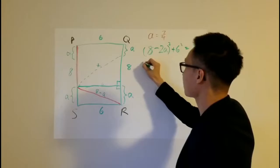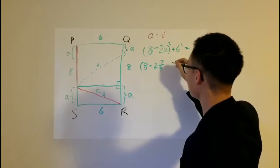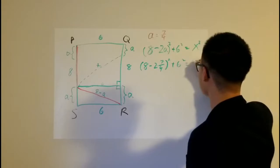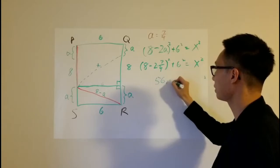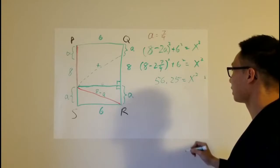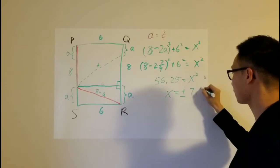So let's plug this in. This will give you 8 minus 2 times 7 over 4, to the power of 2 plus 6 squared is equal to x squared. And if you evaluate this expression, with the help of a calculator, of course, this will give you 56.25 is equal to x squared.